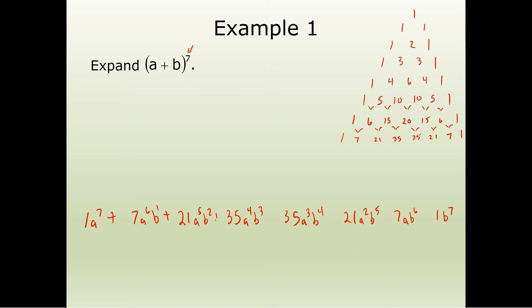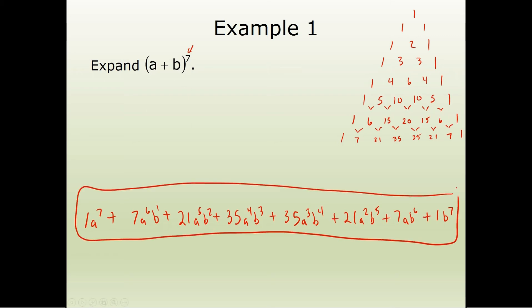This is all addition — everything is positive — so we put the plus signs. And there is the binomial expansion of A plus B to the seventh power. We used Pascal's triangle, which gave us the coefficients. We know that A starts with the exponent and goes down, and B starts with zero and goes up.